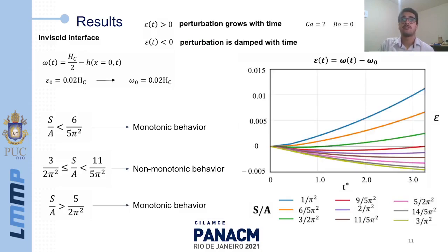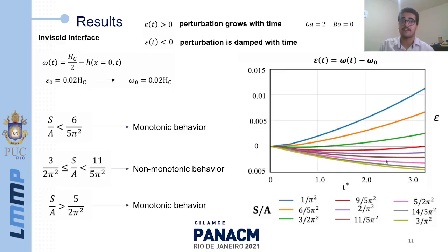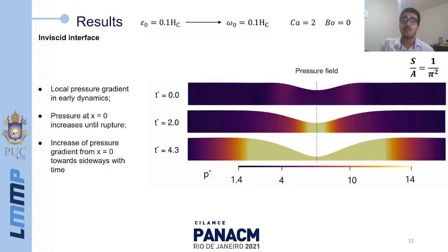These are the results obtained for the inviscid interface case. We initialize our domain with a perturbation amplitude equal to 2% of the undisturbed film thickness Hc, along with a capillary number of 2. We represent the perturbation evolution by the parameter epsilon. In this chart, we have the evolution of epsilon at x equals 0 for various values of S over A. For small values of S over A, the perturbation grows monotonically. Intermediate values lead to retraction until a certain time and then subsequent growth, displaying a non-monotonic behavior. For large values of S over A, retraction occurs until the film recovers a homogeneous thickness. Here we keep S over A equal to 1 over pi squared.